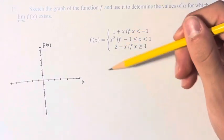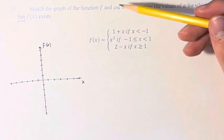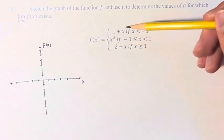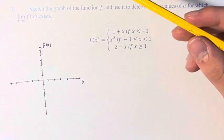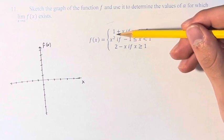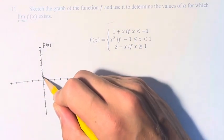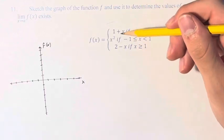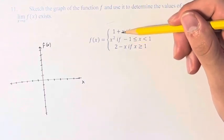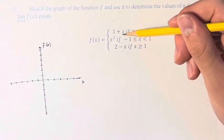So we have this piecewise function here, so let's graph all of the pieces. First we have f(x) is equal to 1 plus x. So this is a line, so we have this constant right here is the y-intercept.